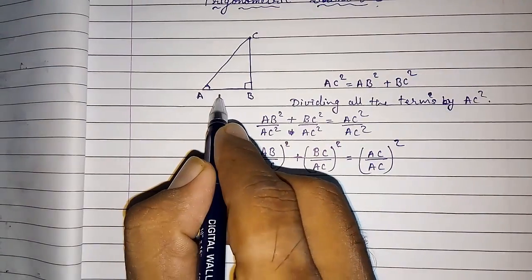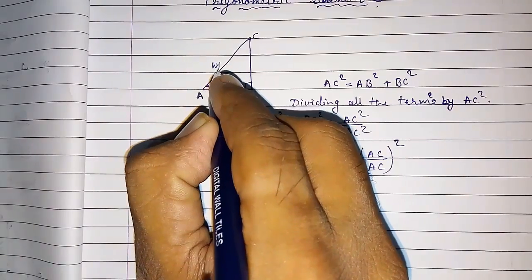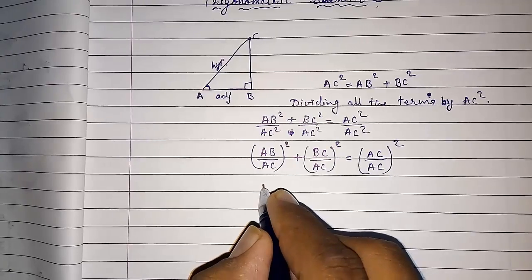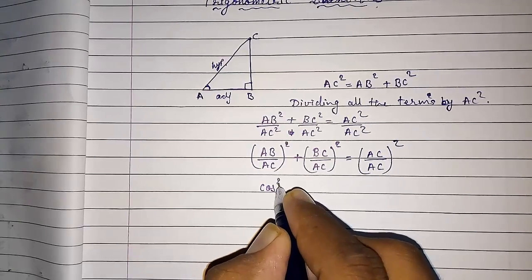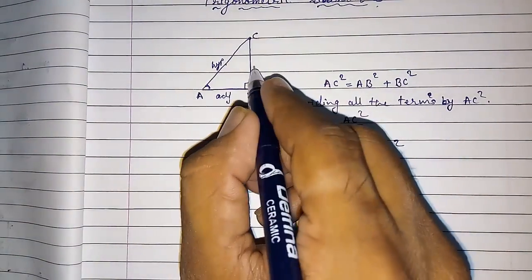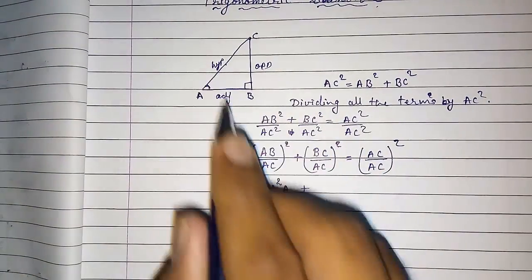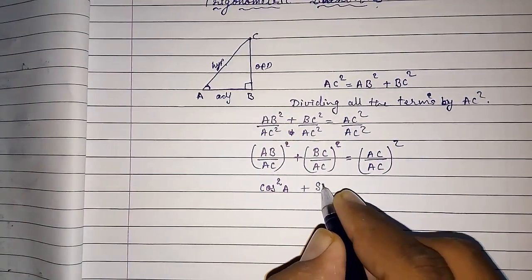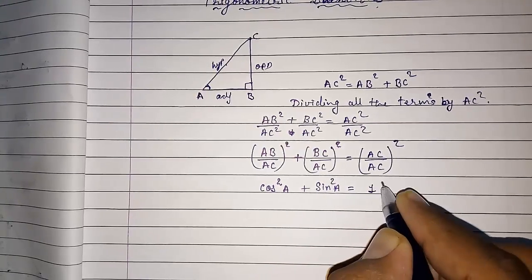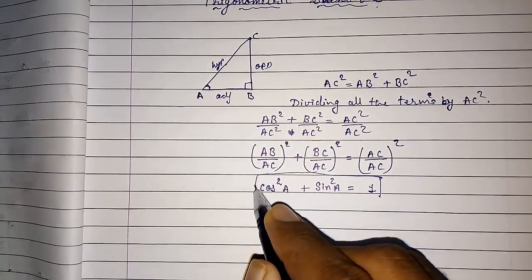So now, taking angle A: AB will be adjacent and AC will be hypotenuse. So adjacent by hypotenuse gives you cos²A. Now BC by AC means opposite of angle A by hypotenuse, so opposite by hypotenuse gives you sin²A, equals (AC/AC)² so one squared, which is one. So this is our first identity: sin²A + cos²A = 1.